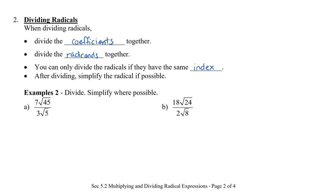In this first one, we have 7√45 divided by 3√5. We notice that 7 can't divide by 3, so we're going to leave that as a fraction. However, I can divide √45 and √5. So I'm going to rewrite the 7 and the 3, and then √45 divided by √5 is √9.